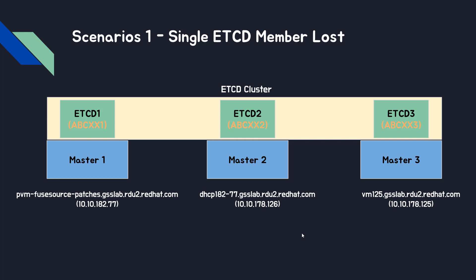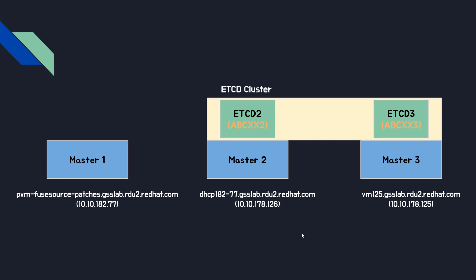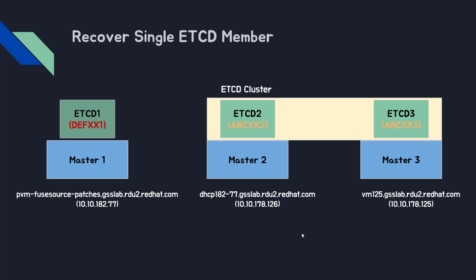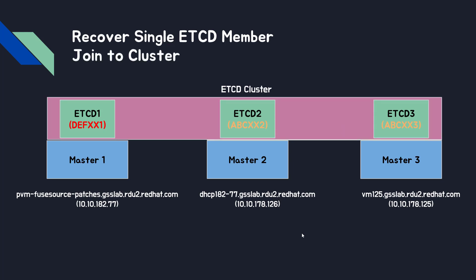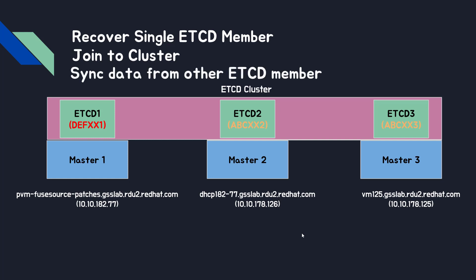The first scenario: single ETCD member lost. We have three ETCD members. If we lose one of them, how do we recover it? This is the recovery process. First, we recover the single ETCD member — as you can see, the ID is changed, but it is still okay. We can join it to the cluster again, and after that, this ETCD will synchronize data from the other ETCD members.